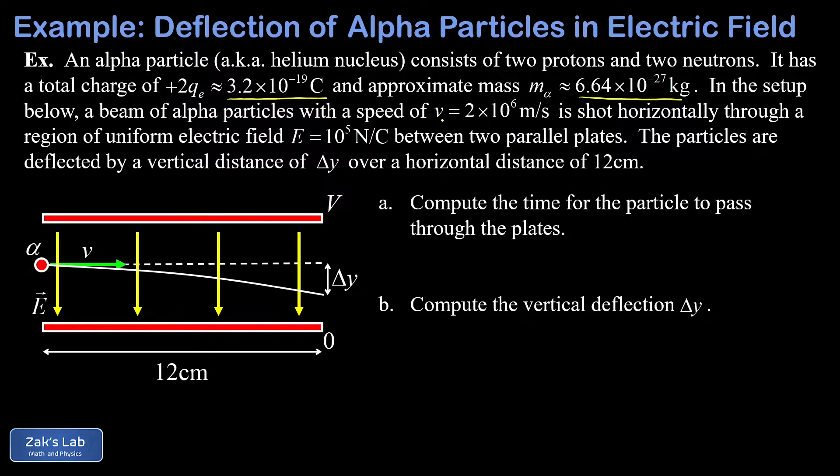And we're told the particles in this beam have a speed of 2 times 10 to the sixth meters per second. The strength of the electric field is 10 to the fifth newtons per coulomb.